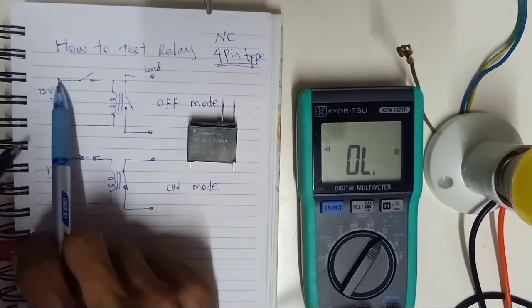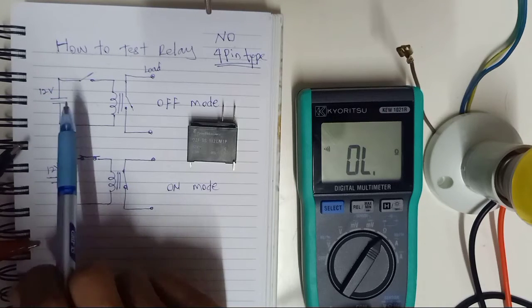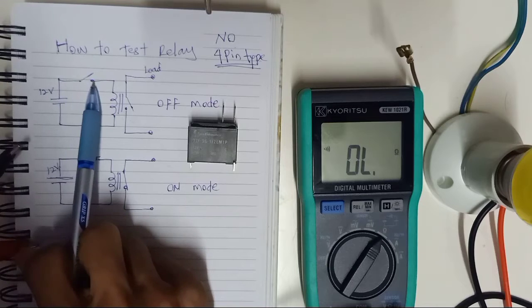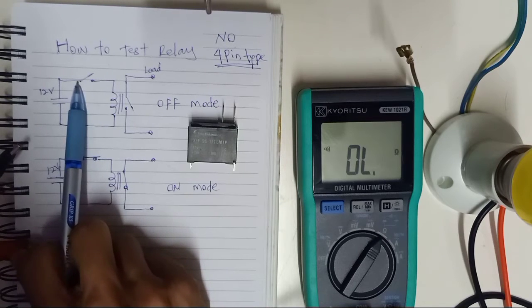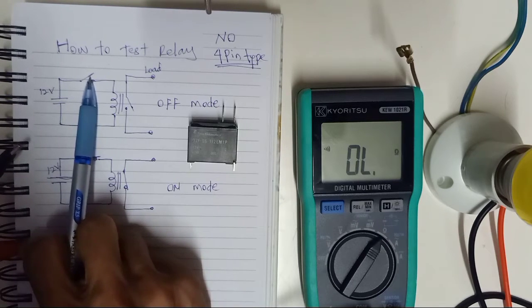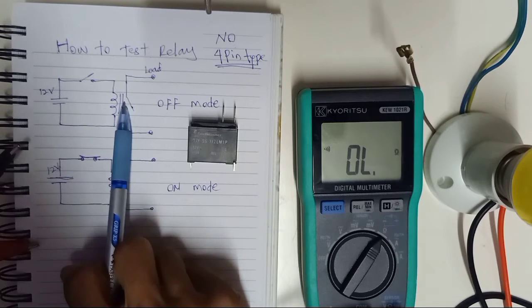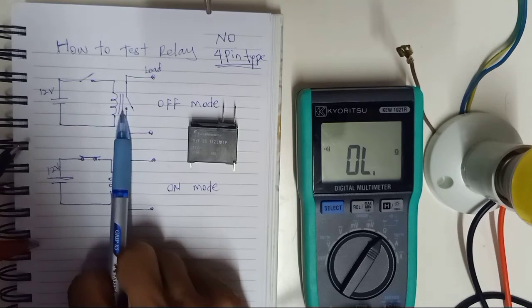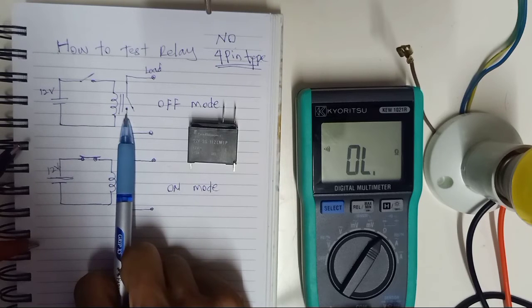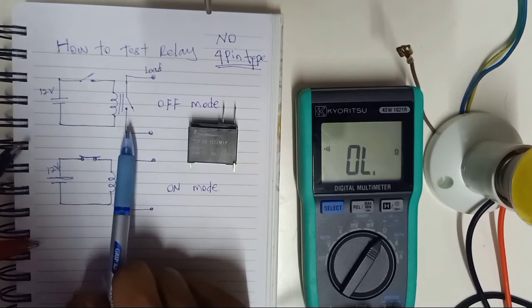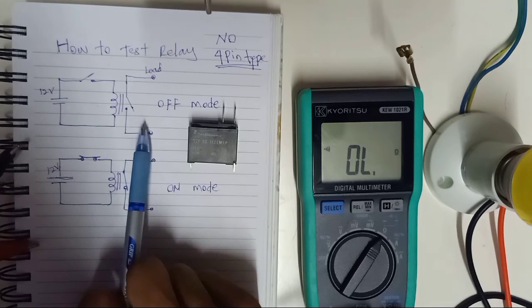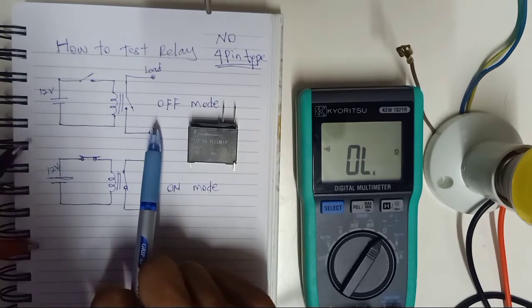This is the symbol of the 4-pin relay. Now we didn't supply the power so the coil is open here. The magnet is not conducting so the relay is open. This is the normally open 4-pin relay condition.